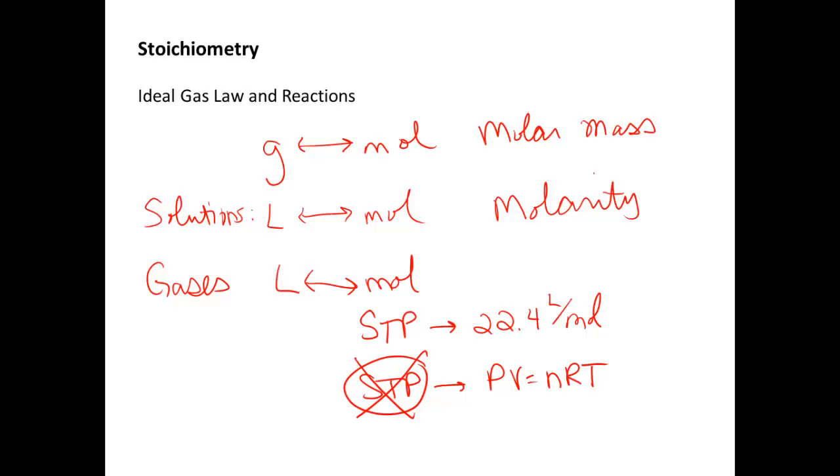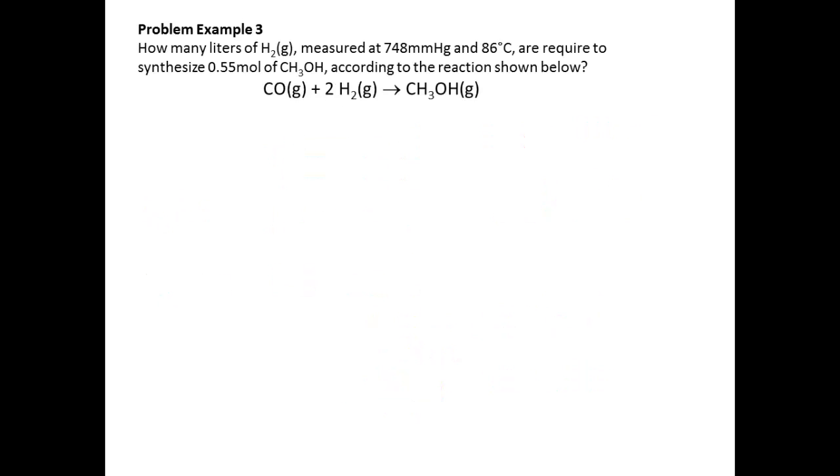So let's see how that incorporates itself. In problem example three, we are asked how many liters of hydrogen gas measured at 748 millimeter mercury and 86 degrees Celsius are required to synthesize 0.55 moles of CH3OH according to the reaction below. So since we're asked about how many liters of H2 gas we need, that means that we're not going to be starting at the parameters that are given for hydrogen gas. We know that we need to use the information given about the other substance first, which is the 0.55 moles of CH3OH. And we're going to use that to get to moles of H2 because that's what we're trying to figure things out about.